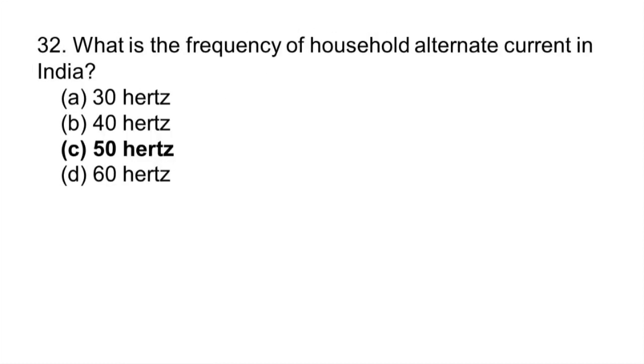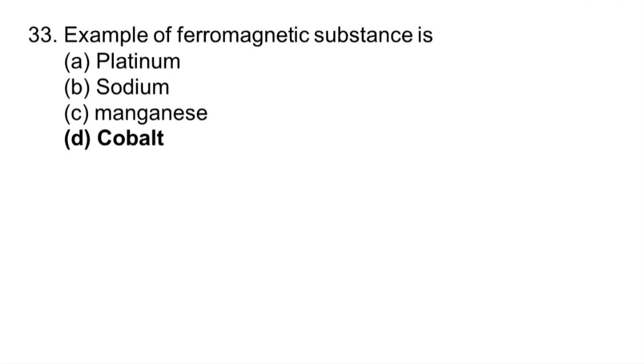What is the frequency of household AC in India? 50 Hz. Example of ferromagnetic substance: cobalt.